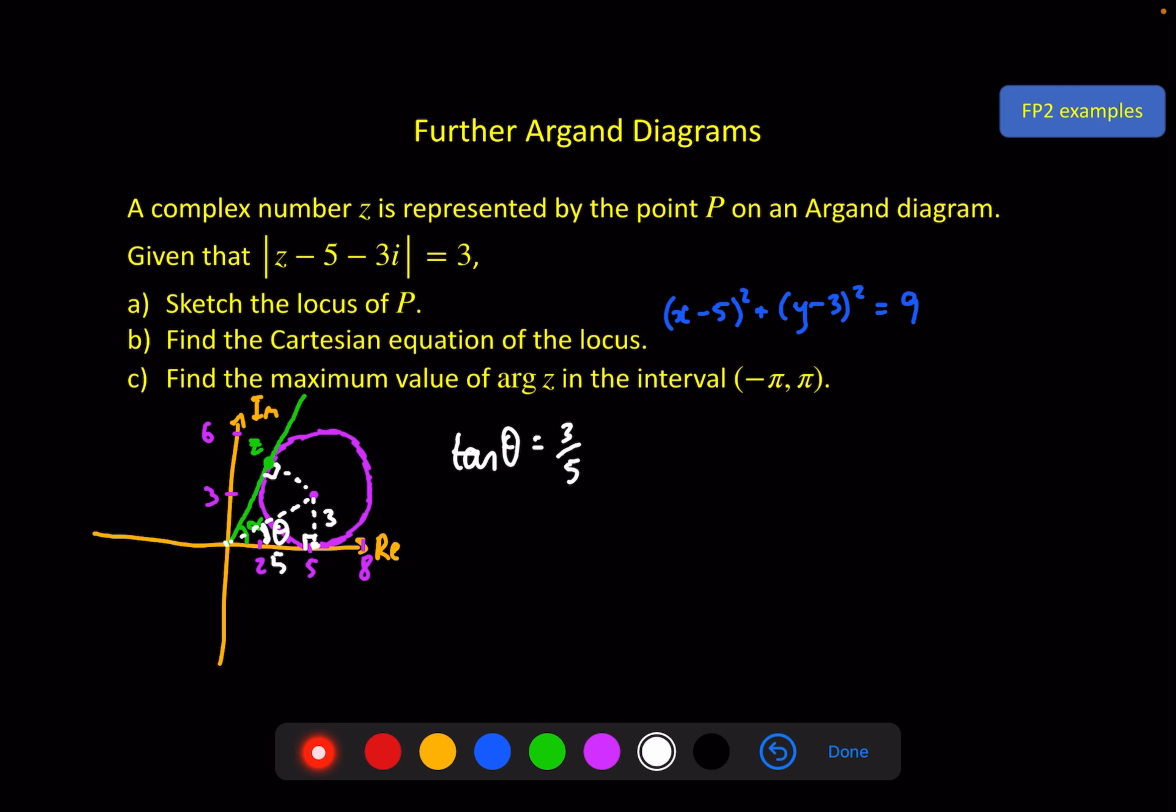So if I call that theta for a moment, the tan of θ is equal to 3/5. And then my green angle α, the one I actually want, is equal to 2 times θ because of the symmetry. The only thing left to do then is to put it all on my calculator. This in radians is 0.540, and if we times that by 2, rounding to 3 significant figures, gives us 1.08 radians.